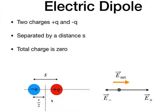But it still makes an electric field. Here I have an example of a negative Q and a positive Q centered at the origin, a distance s apart. I'm going to find the electric field on the x-axis. I could calculate the electric field due to the positive charge, then the electric field due to the negative charge, and add them up.